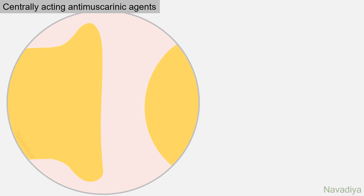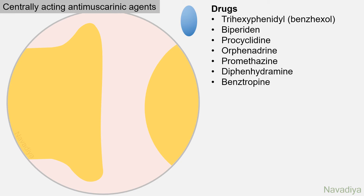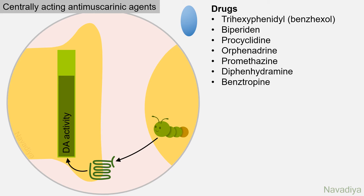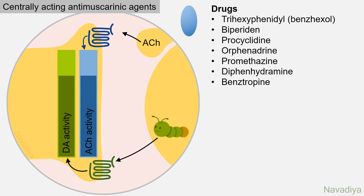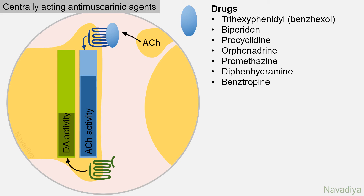Now the final group: centrally acting anti-muscarinic agents. These include trihexyphenidyl, biperiden, procyclidine, orphenadrine, promethazine, diphenhydramine, and benztropine. Basal ganglia have both dopaminergic and cholinergic neurons. In Parkinson's disease, there is no problem with cholinergic neurons; however, degeneration of dopaminergic neurons reduces dopamine activity, resulting in a relative increase in cholinergic activity. These drugs block muscarinic receptors and thus bring cholinergic activity into balance with dopamine activity.